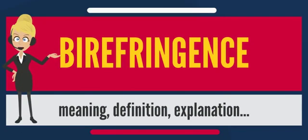Birefringence is the optical property of a material having a refractive index that depends on the polarization and propagation direction of light. These optically anisotropic materials are said to be birefringent or birefractive. The birefringence is often quantified as the maximum difference between refractive indices exhibited by the material.